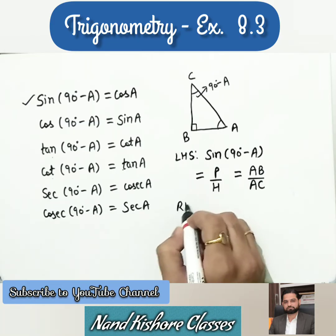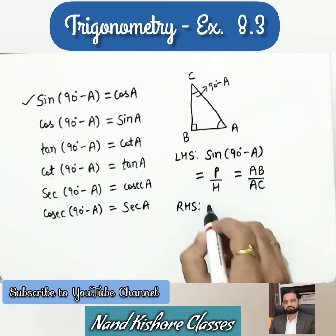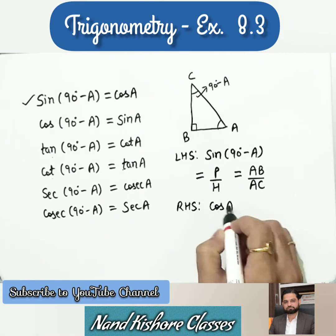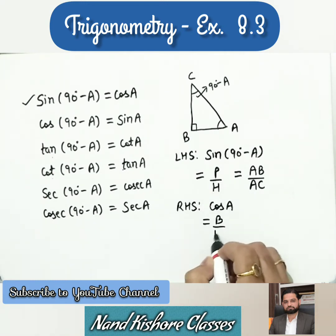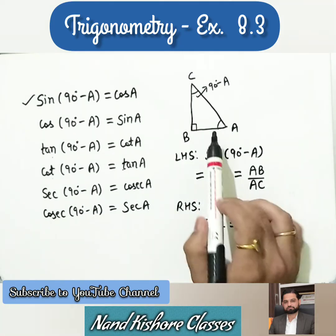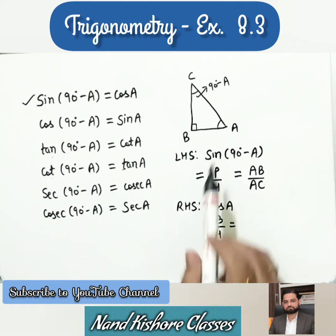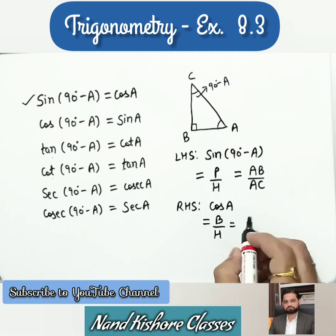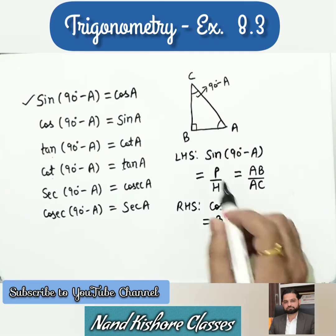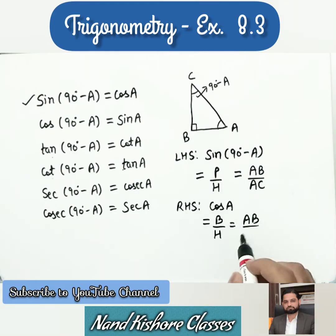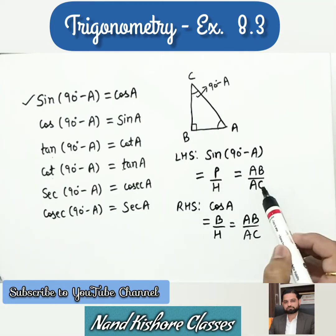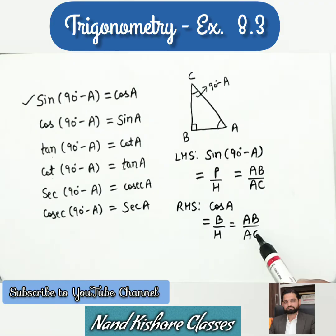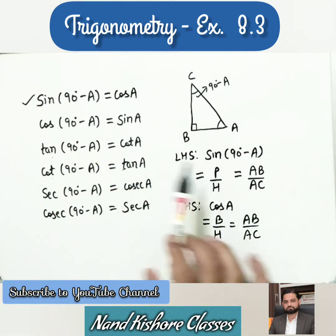The right side is cos A. Cos A = base over hypotenuse. For angle A, the base is AB and hypotenuse is AC — giving AB over AC. Left side equals right side, so sin(90 - A) = cos A is proved. The same method can be used for other parts.